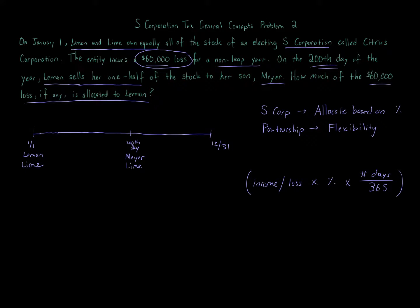The loss here of $60,000, we're going to multiply that by the percentage. Look at our timeline: Lemon owned 50% from January 1st to the 200th day of the year, so it's 50%. This is for Lemon, Lemon's share, that's all we care about. I can also show you how to do Lime and Meyer.